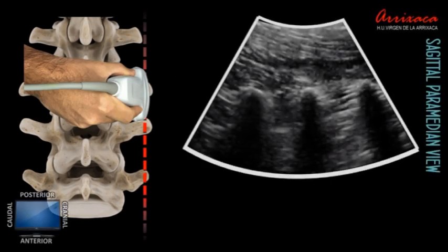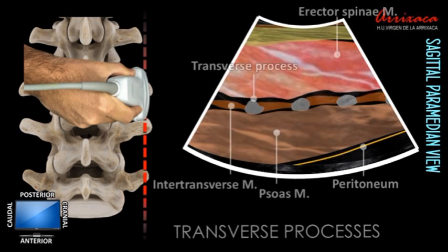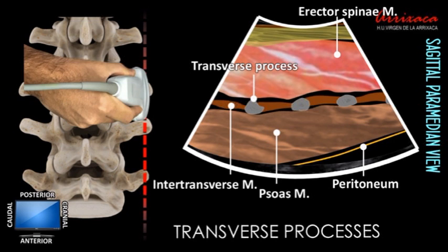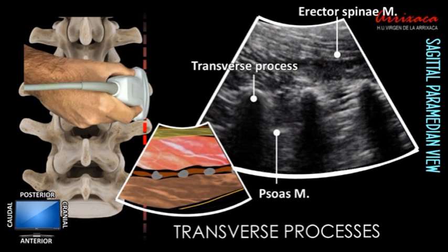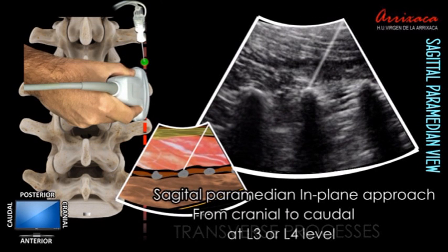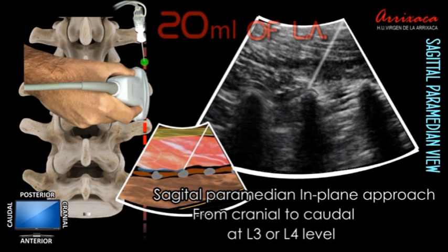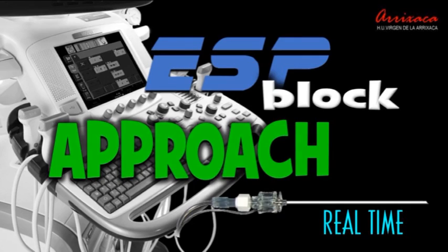The transverse processes are identified as finger-like acoustic shadows separated by the striated psoas major muscle. The erector spinae muscle lies superficial to the transverse processes. The needle is inserted in-plane and directed cephalic to caudal, one or two spaces above the surgical target. 20 milliliters of long-acting local anesthetic solution is then carefully injected.